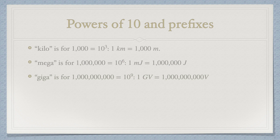The prefix giga is for 1 billion, that is 10 to the power 9. 1 gigavolt is 1 billion volts. The prefix tera is for 10 to the power 12. The prefix peta is for 10 to the power 15. And so on.